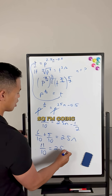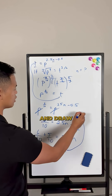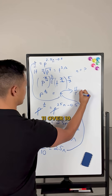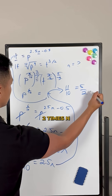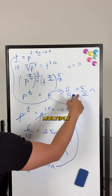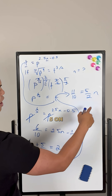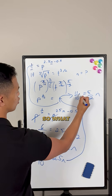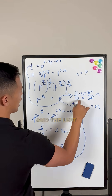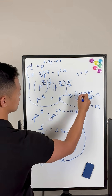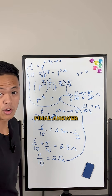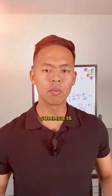Now 2.5 is the same as 5/2, so we have 11/10 equals (5/2) times n. Multiply both sides by 2/5 to isolate n. The right side becomes just n, and the left side becomes 11/25. So n equals 11/25 is your final answer.